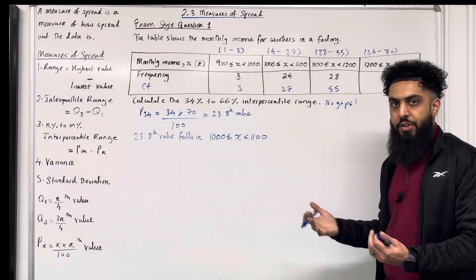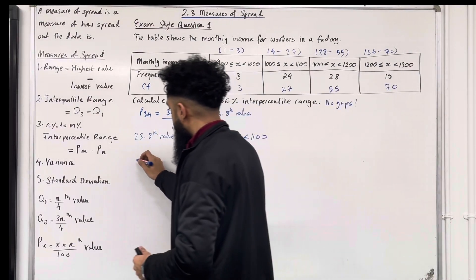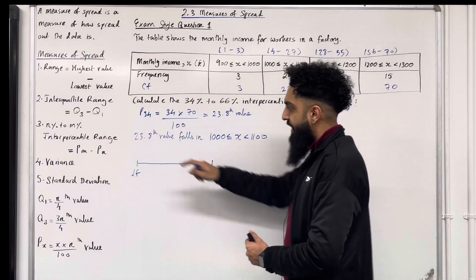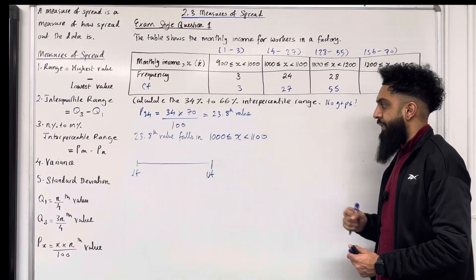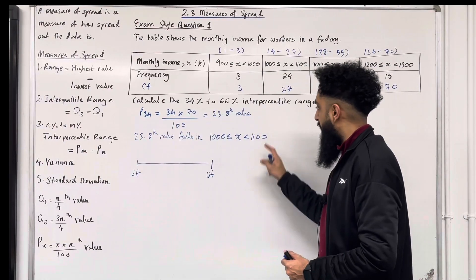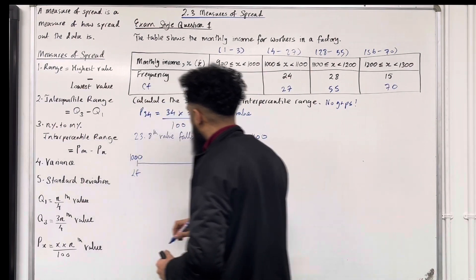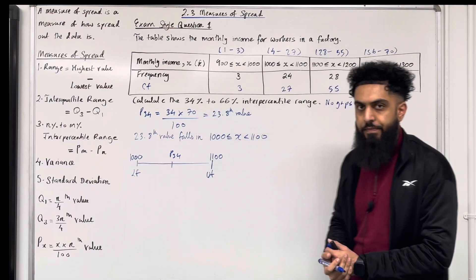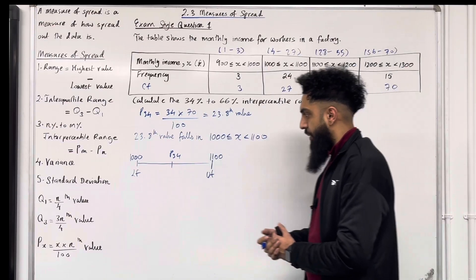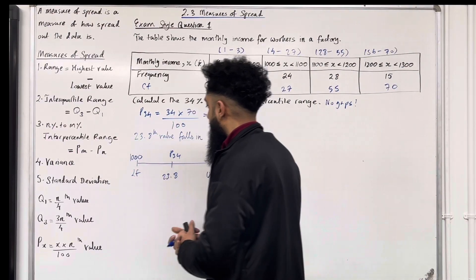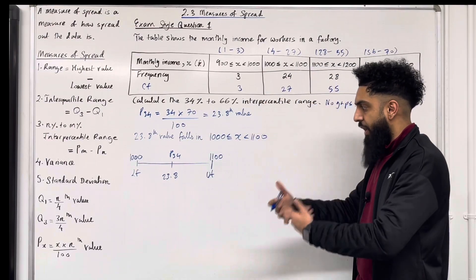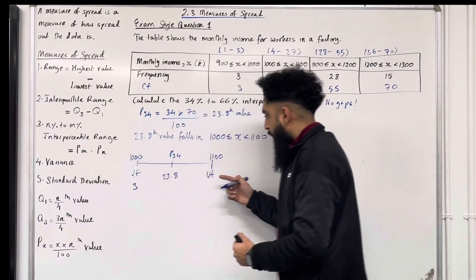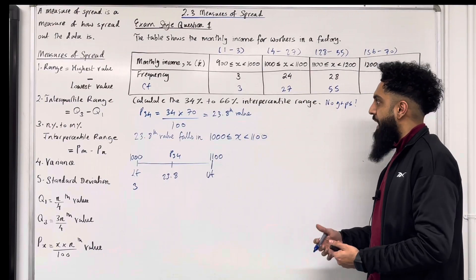1000 is included. Now we're going to draw a diagram with lower frequency LF and upper frequency UF. Since the data has no gaps, we stick to 1000 on the left and 1100 on the right. P34 is somewhere between these two numbers — it is the 23.8th value. The lower frequency is the cumulative frequency before the class interval we are interpolating, so the lower frequency is 3. The upper frequency is the cumulative frequency of the class interval we're interpolating, which is 27.